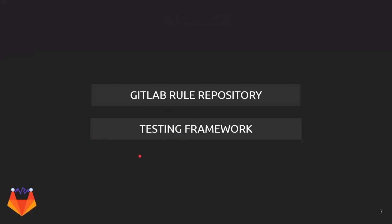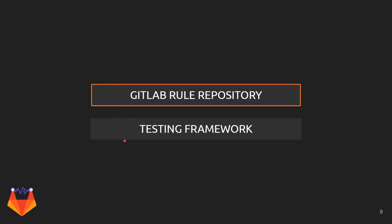Thank you, Julian. So what Julian shared was all the motivation — the what and why of the project. In the upcoming slides, I'll give you an overview of all the technical details and what exactly has been done. We divided our whole project into two main parts: the GitLab rule repository and the testing framework. The GitLab rule repository is a project where all the analyzers being translated into SEMGREP have their corresponding rule sets and test cases.